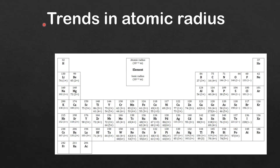On this periodic table we have the atomic radius at the top and the ionic radius at the bottom. Looking at group 1, going down group 1 we have lithium which has an atomic radius of 130×10⁻¹² meters, and as you go down group 1 the atomic radius is increasing. Looking at group 2, starting with beryllium which has an atomic radius of 99×10⁻¹² meters, you can see as you go down group 2 the atomic radius is also increasing.